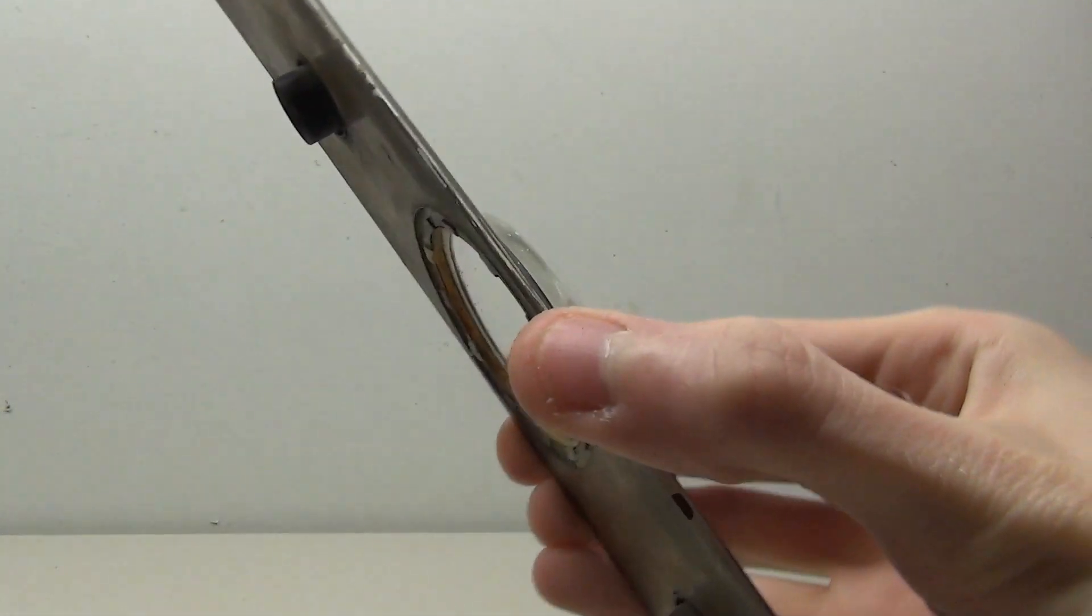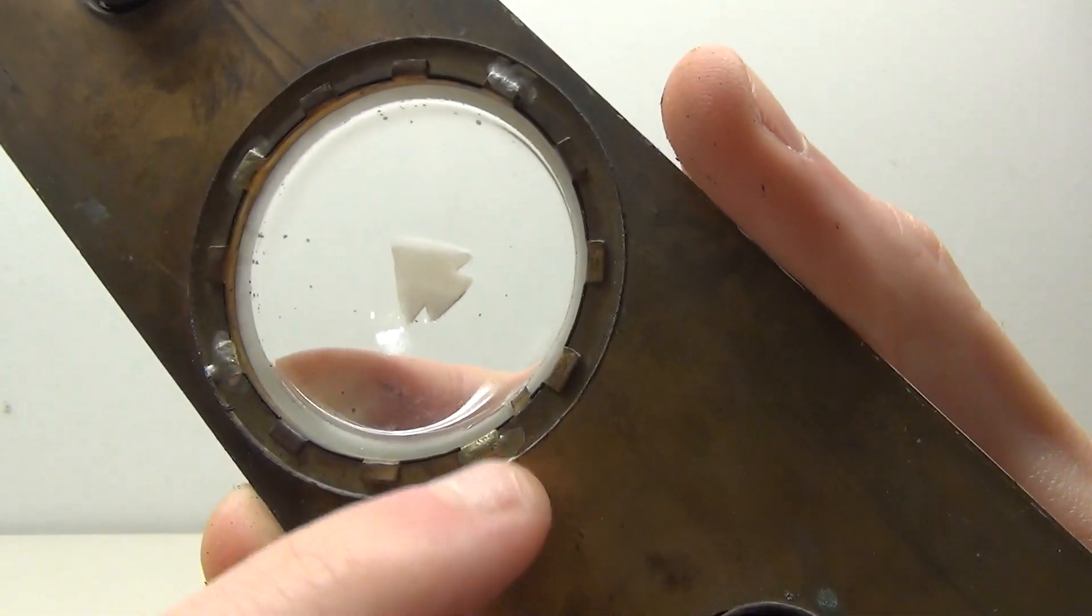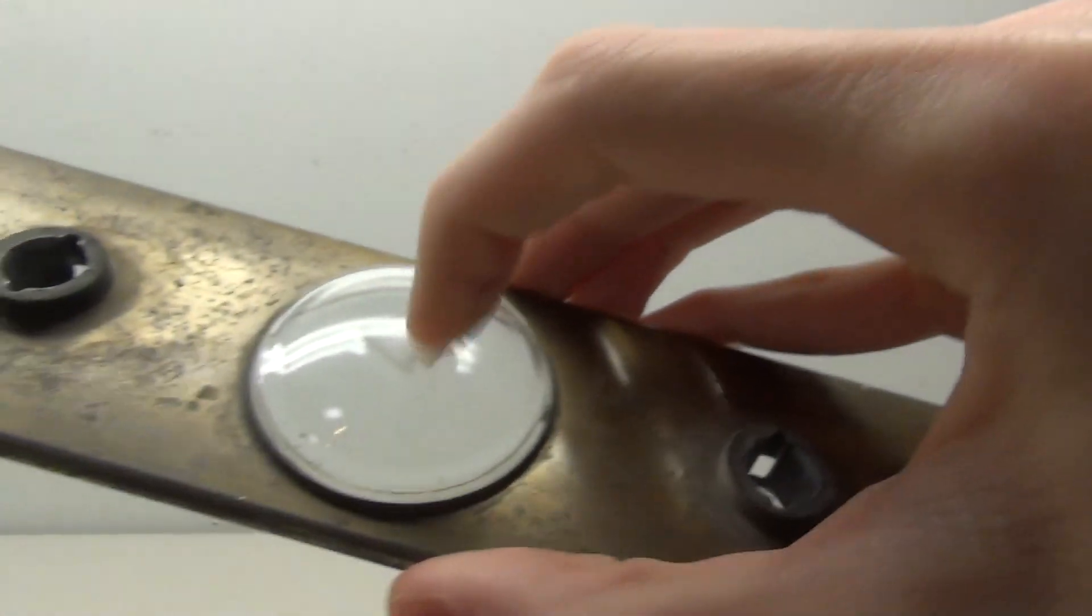So the glass portion of the indicator is held in with these little metal tabs and some of them are attached so we won't be able to remove this very easily.